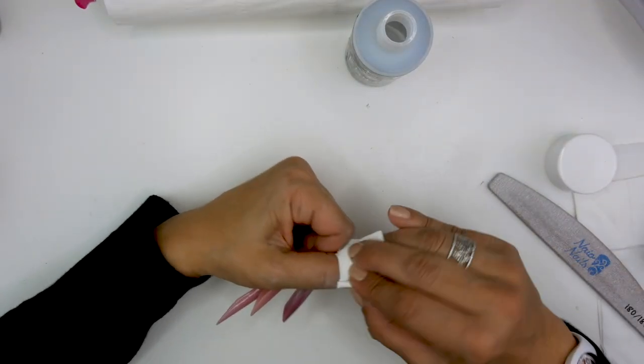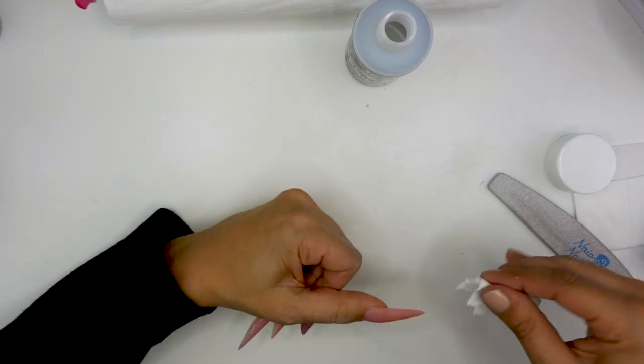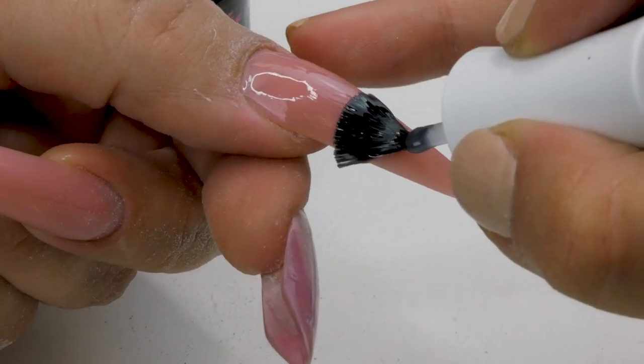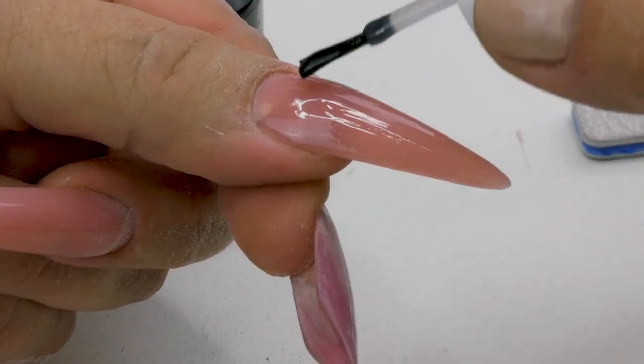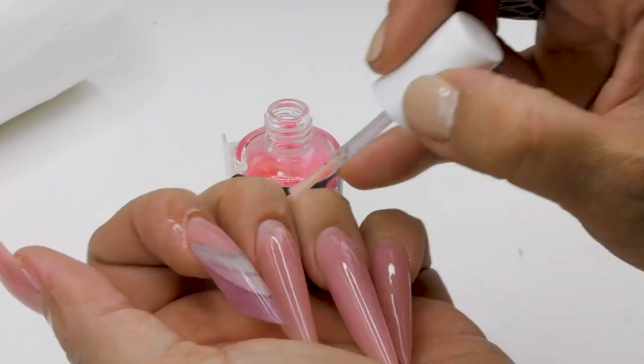I'm going to wipe over with some Gel Residue Wipe-off Solution. And now I'm going to apply the Urban Graffiti Top Coat. And we're going to cure one minute. And now I'm going to apply some Cuticle Oil.